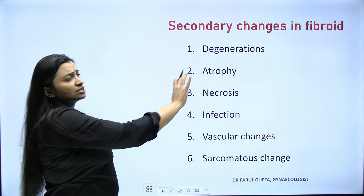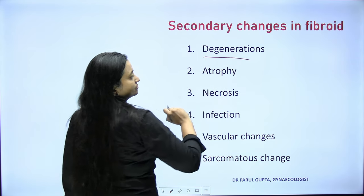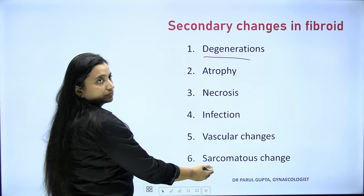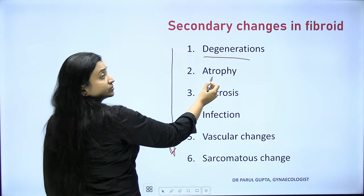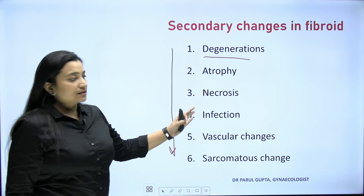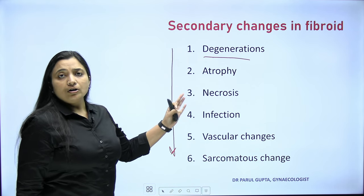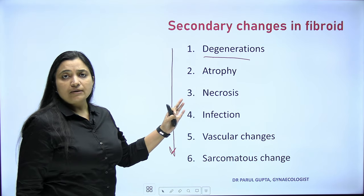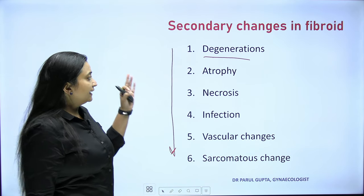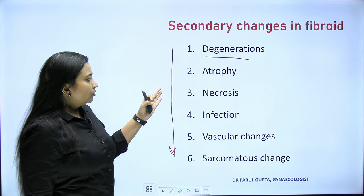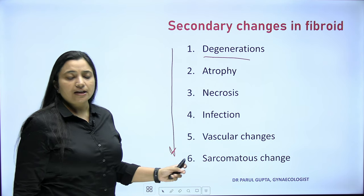Secondary changes in fibroid can be of six types. Most common is degeneration, and from most to least common: degeneration, atrophy, necrosis, infection, vascular changes, and sarcomatous changes. For UG and PG exam candidates, remember all six names. We will elaborate and possibly make a mnemonic.